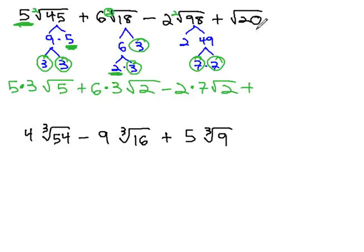Plus, simplifying the 20, the 20 factors to 2 times 10, and the 10, 2 times 5, and so we see the pair of 2's, which comes out, and the 5 left behind.